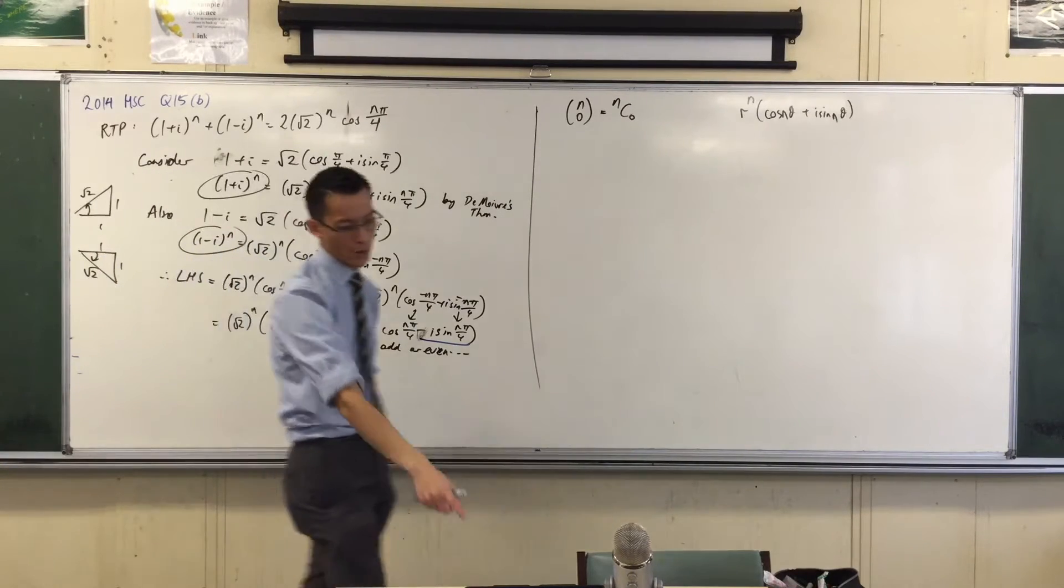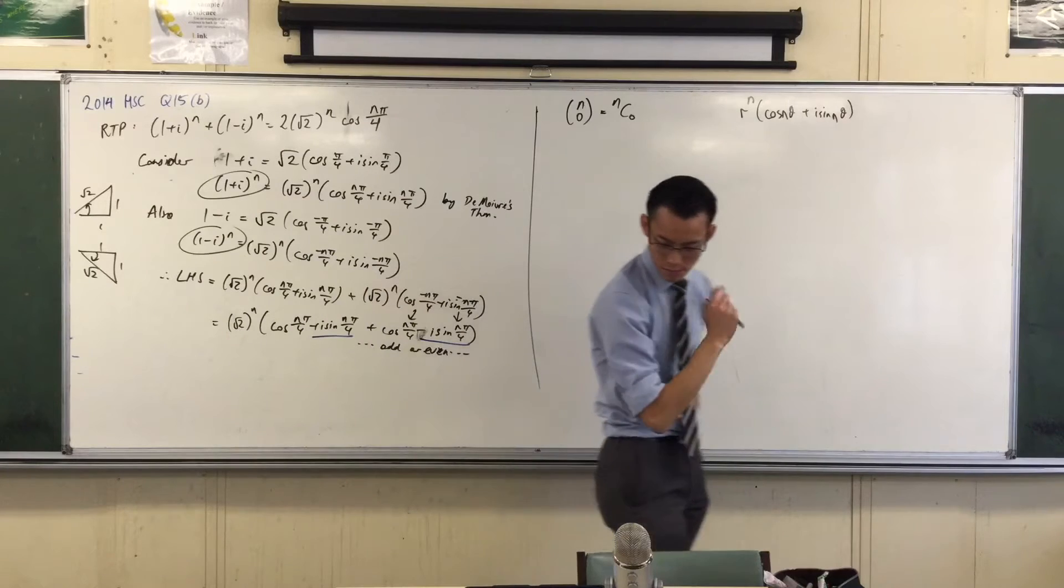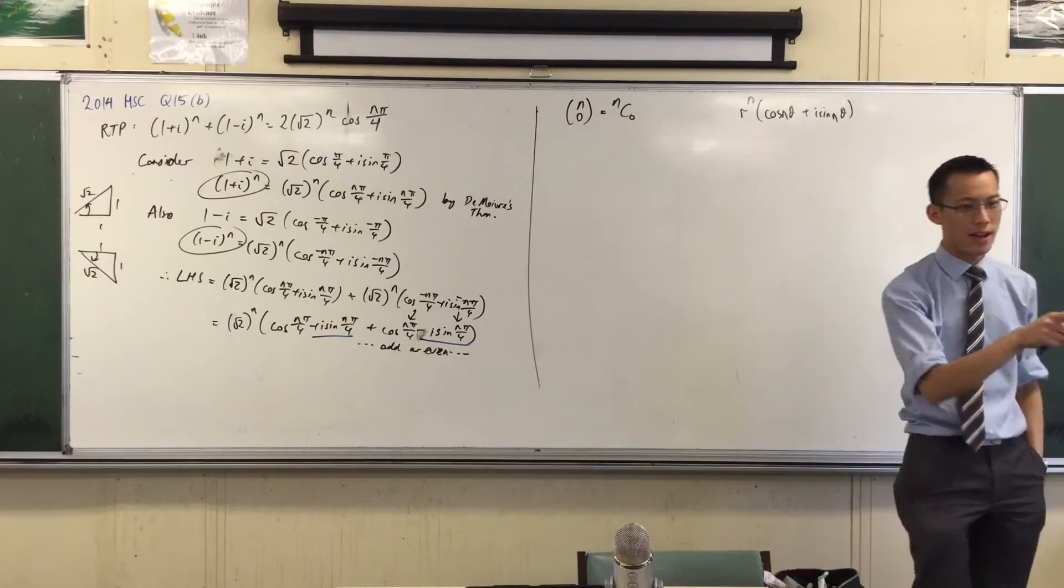This is another way of writing this. Do you agree with that? This is a binomial coefficient. Now, have a look. It's not just one binomial coefficient. You've got a whole bunch of them.